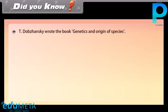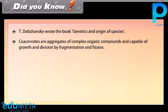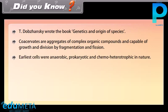T. Dobzhansky wrote the book Genetics and Origin of Species. Coacervates are aggregates of complex organic compounds capable of growth and division by fragmentation and fission. Earliest cells were anaerobic, prokaryotic and chemo-heterotrophic in nature.